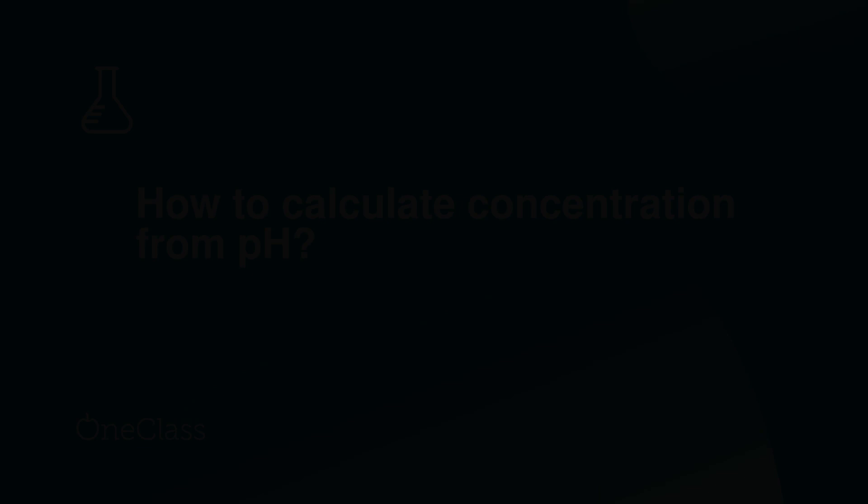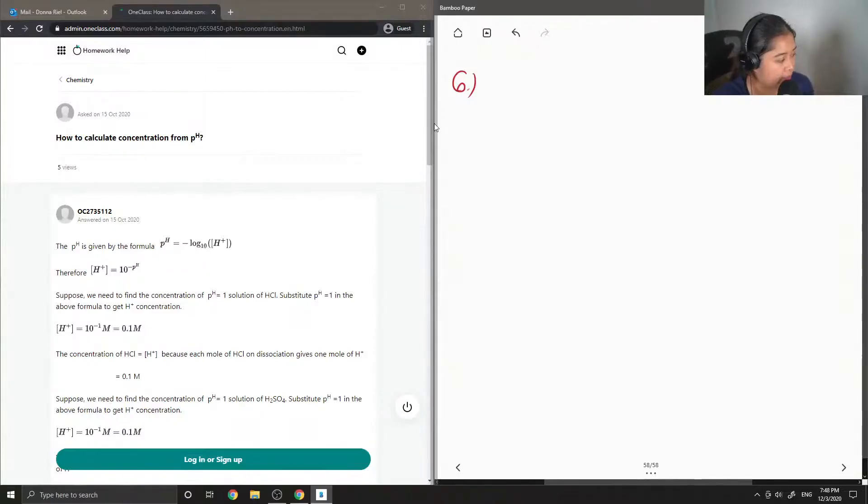Question 6 asks, how is H? So, the pH equation is pH is equal to negative log of H+.